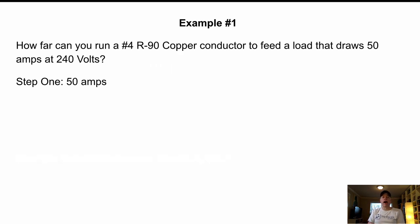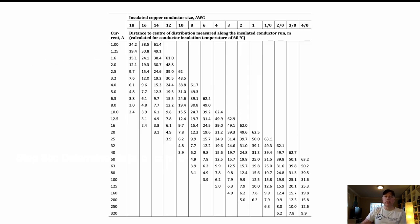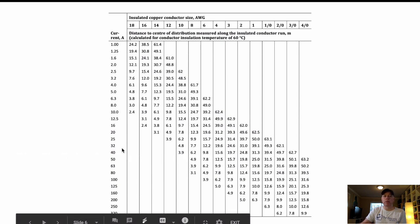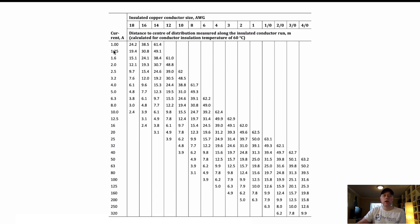So example one, how far can you run a number four R90 copper conductor to feed a load that draws 50 amps at 240 volts? So if we're going through our steps again, is this a known load or is it off a breaker or fuse? We know it's a known load. So step one is 50 amps. So what we're going to do here is 50 amps. This is table D3. So if you go to the appendix D and you find table D3, this is looks very similar. We're going to run our fingers down over to 50 and then we're using number four. So we've got the conductor sizes up here. So we're running 50 over to number four and we see that we're connecting at 12.5. That's 12.5 meters.